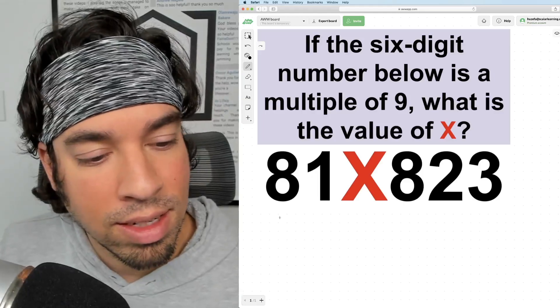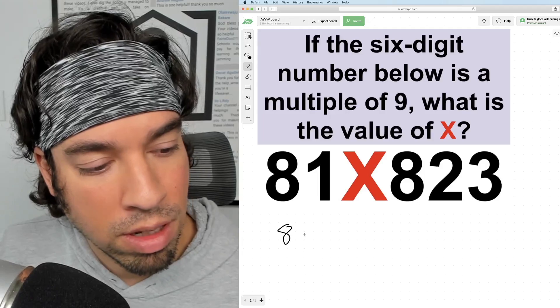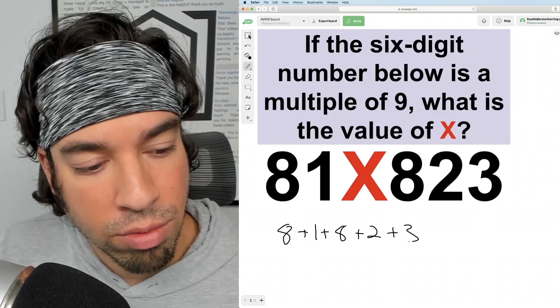So we can take the existing digits and see what they add up to. We got 8 + 1 + 8 + 2 + 3. So this adds up to 10, this adds up to 9, and that adds up to, of course, 3.